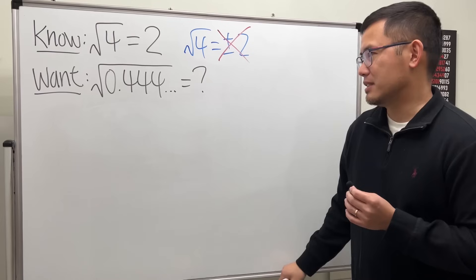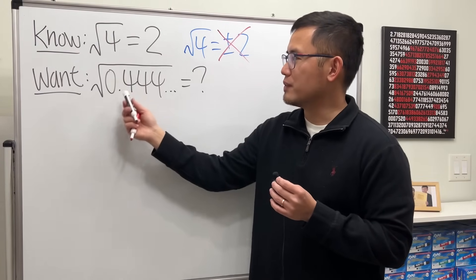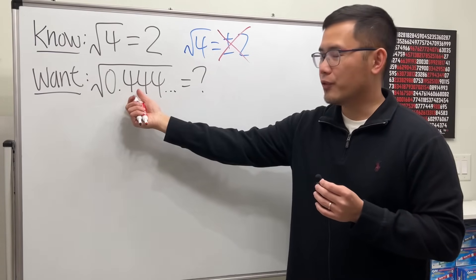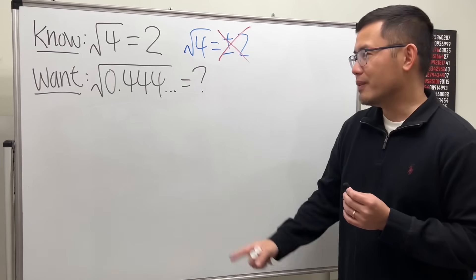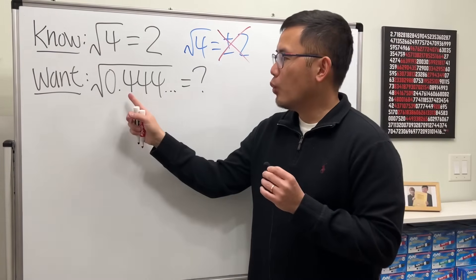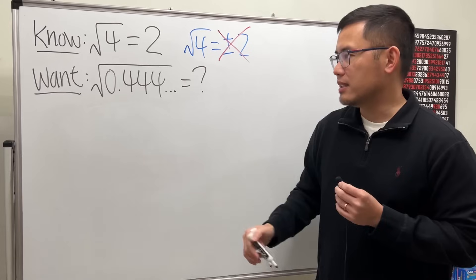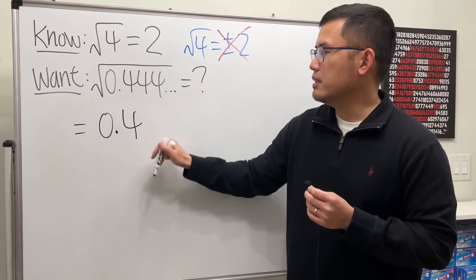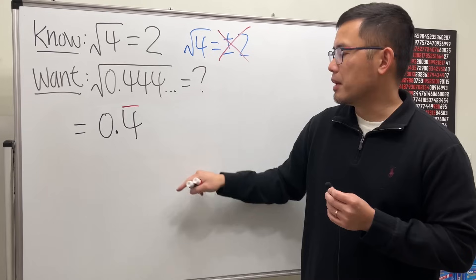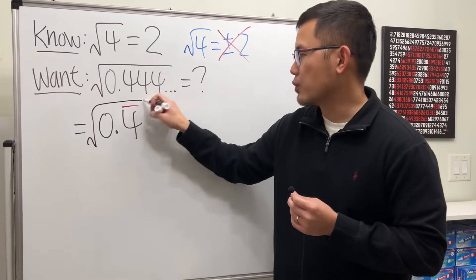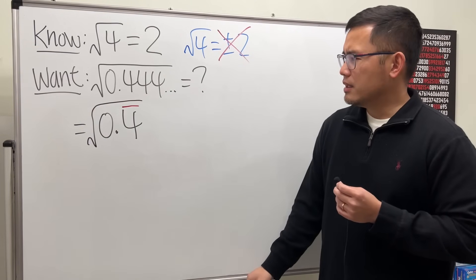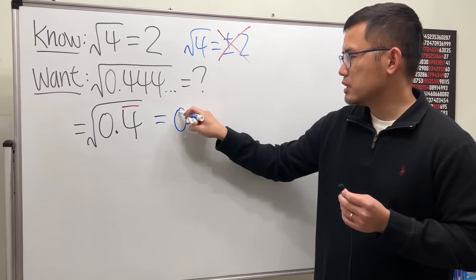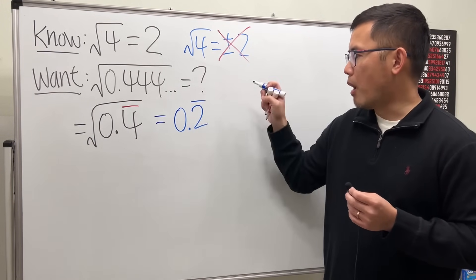Based on this, can that help us with the value for square root of 0.4444...? Which means 4s repeating forever. When we have a repeating decimal, we can also write it as 0.4 with a bar above it. Then take the square root. Isn't this just going to be easy? Since square root of 4 is 2, isn't this just going to be 0.2 with a bar above it?